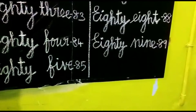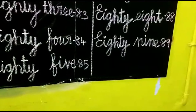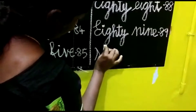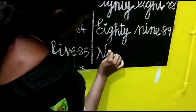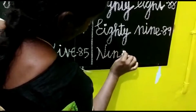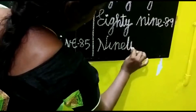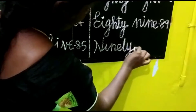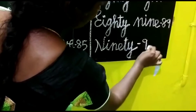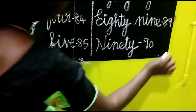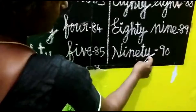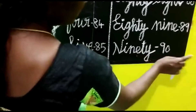90. What's spelling for 9? 89. N-I-N-E. Then NINETY. 90. N-I-N-E-T-Y. 90.